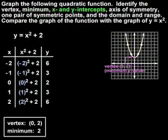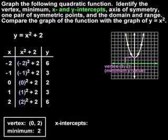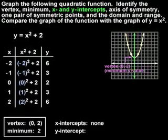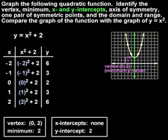Next, we're asked to identify the x and y-intercepts of the parabola. Remember that the x-intercepts are the points where the parabola crosses the x-axis, and notice that the parabola does not cross the x-axis. Therefore, there are no x-intercepts. Remember that the y-intercept is the point where the parabola crosses the y-axis, and notice that the parabola crosses the y-axis at the point (0, 2). So the y-intercept is 2.